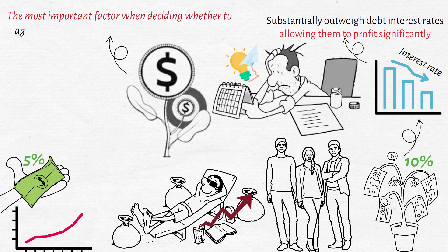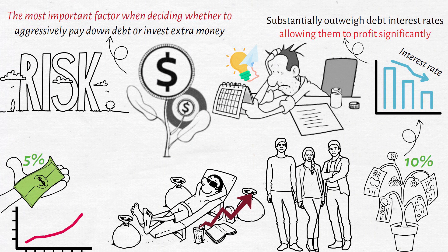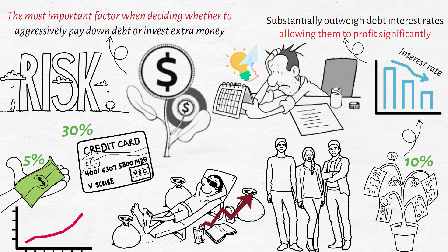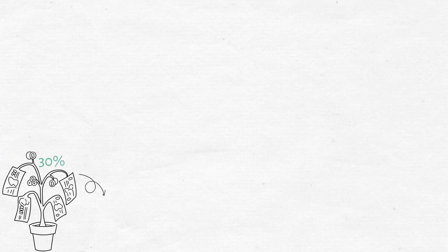The most important factor when deciding whether to aggressively pay down debt or invest extra money is loans at risk. You're essentially earning a guaranteed return. If a credit card company charges you 30% interest and you pay off that debt, that is similar to obtaining a return on 30% investment with no risk.